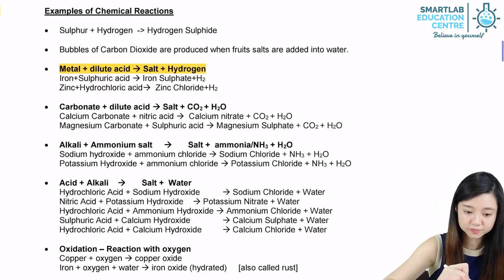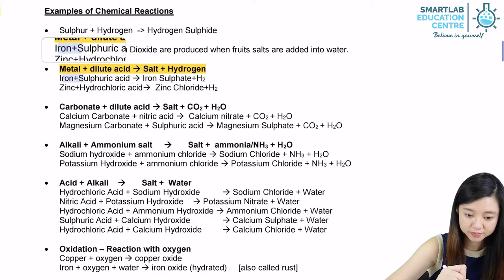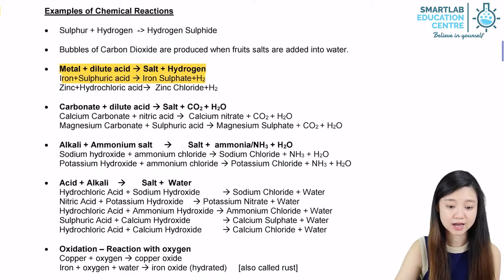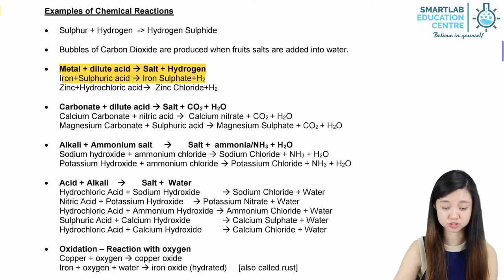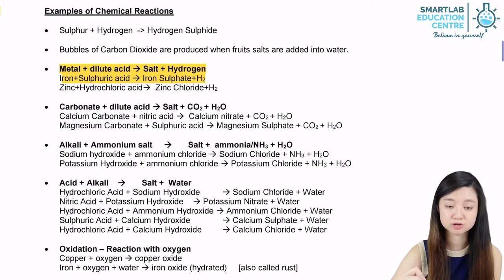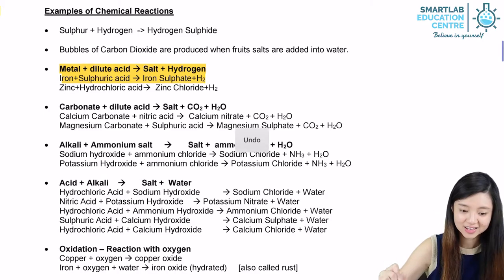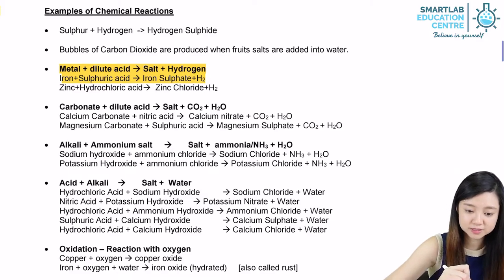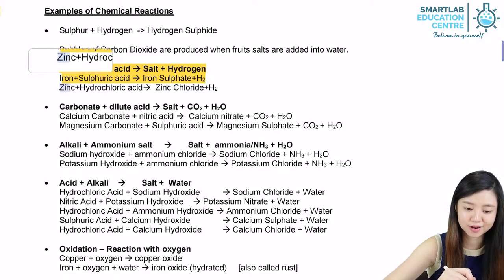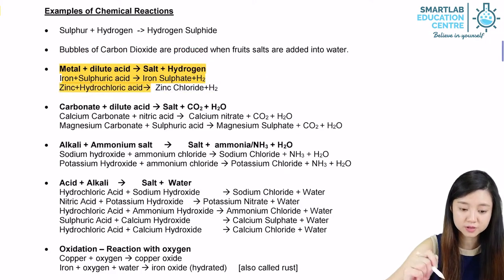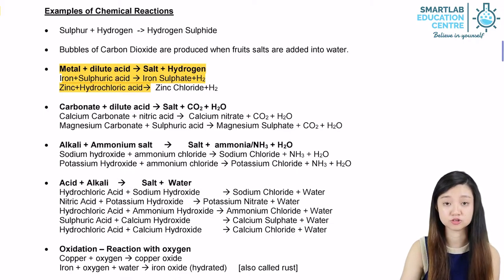For example, if we have iron plus sulfuric acid, it will give us iron sulfate plus hydrogen. Iron sulfate is the salt formed from the cation from iron and the anion from sulfuric acid. Another example: zinc plus hydrochloric acid gives us zinc chloride plus hydrogen. Zinc chloride is the salt formed between zinc and hydrochloric acid.